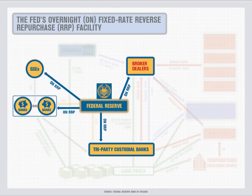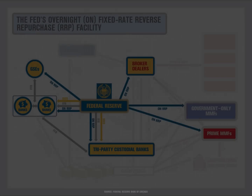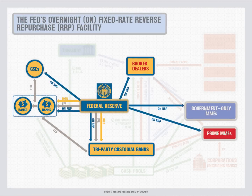Recall that the Fed funds rate often trades below IOER because institutions such as the GSEs are ineligible to earn IOER and therefore willing to lend below IOER. By making GSEs eligible counterparties for overnight reverse repo transactions, the Fed is better equipped to influence rates in both the repo and the Fed funds market. GSEs can now lend to the Fed at the fixed overnight reverse repo rate; because these loans have the Fed as counterparty and are collateralized by government securities, they are much safer than unsecured loans in the Fed funds market, so GSEs should be unwilling to lend below that rate. Government-only and prime money market funds are also eligible, and should likewise be unwilling to lend to riskier counterparties at rates below the overnight reverse repo rate. Overall, this implies that the overnight reverse repo rate should provide a floor on short-term interest rates for cash-like investments in both the traditional and shadow banking systems.